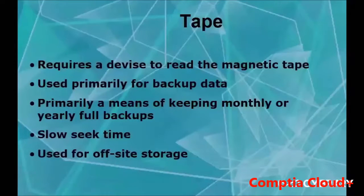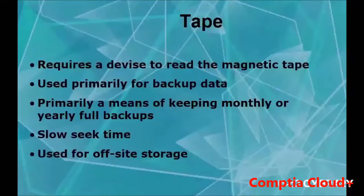Tapes are a common way of storing backups. They use a magnetic strip, similar to VCR tape, where information is stored. Tapes are primarily used for monthly or yearly backups — you save the tape and take it to another site, so that if something happens, like a fire, you can still recover your information from the off-site location. However, tapes have a slow seek time, and you need a secondary device to work with them.